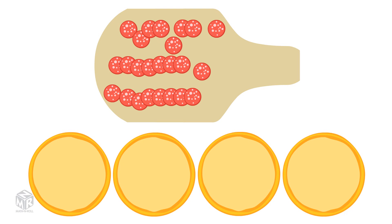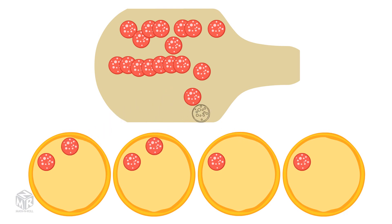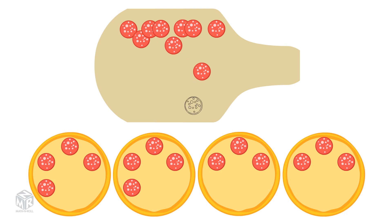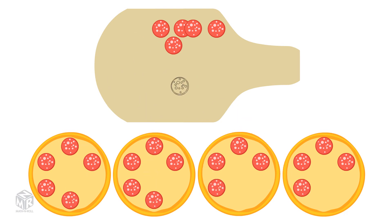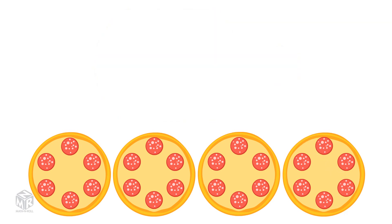Let's start sorting our pepperoni. We have one piece of pepperoni on each pizza, then two pieces, three pieces, and so on. Each of our pizzas ends up with 6 pieces of pepperoni.